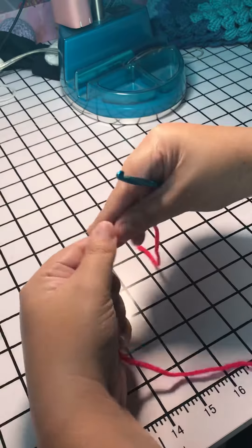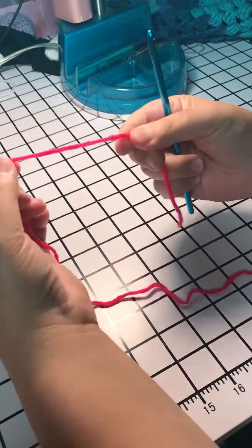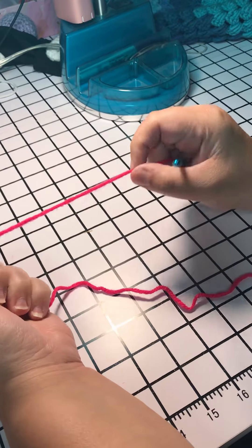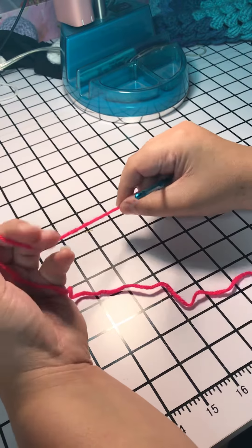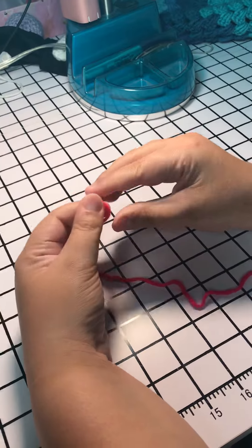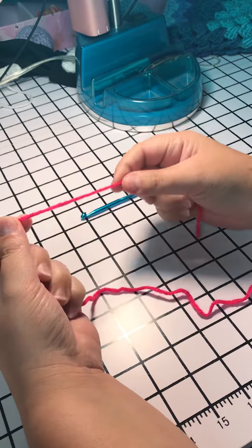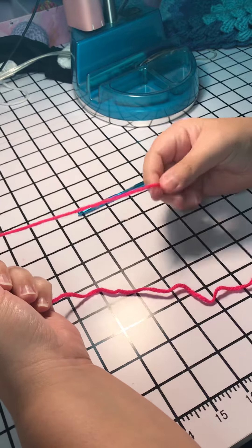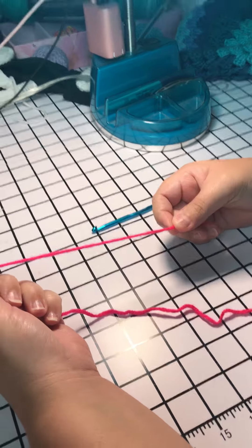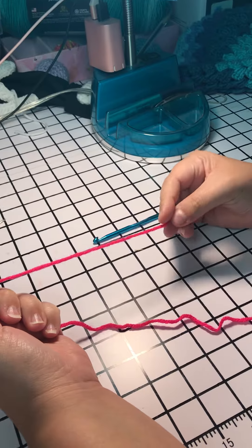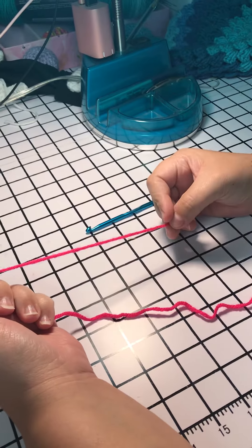So in order to start, grab your yarn. Today I'm using the Grenadine Pink in the Red Heart Super Saver yarn. I like to leave my tail long so that way it's easier for me to weave in at the end of a project.